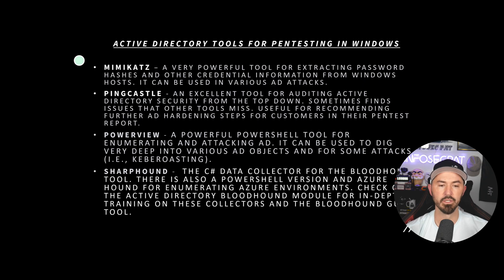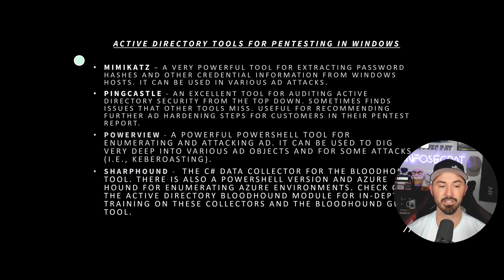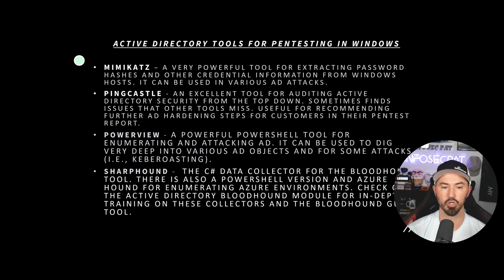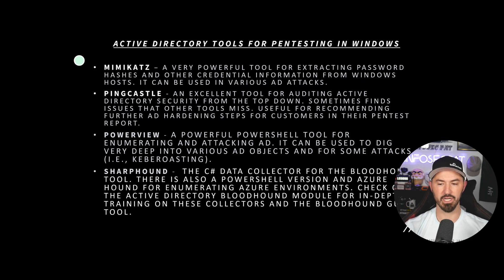PowerView is another one — I think they decommissioned this tool, but I still use it. It's a powerful PowerShell tool for enumerating and attacking AD, and can dig very deep into various AD objects and be used for attacks like Kerberoasting. The last one is SharpHound — a C# data collector for Bloodhound. You run SharpHound, collect your data, and throw it into Bloodhound. There are also PowerShell versions and AzureHound for enumerating Azure environments.